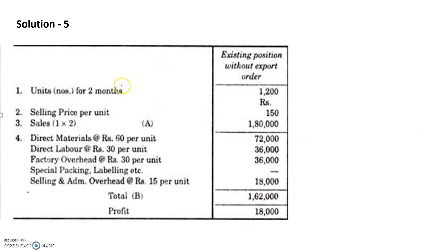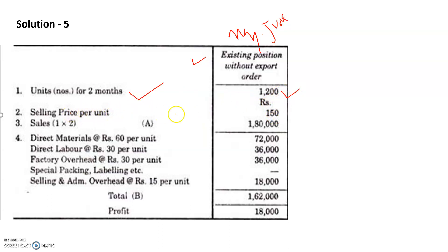This is the existing situation - the position without the export order. For May and June combined, units produced are 600 per month into two months, so it is 1200 units for the national market. The selling price is Rs. 150 per unit, so total sales will be 1200 into 150 = Rs. 1,80,000.